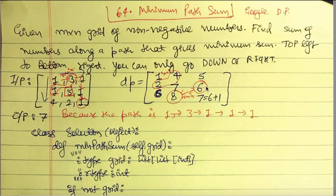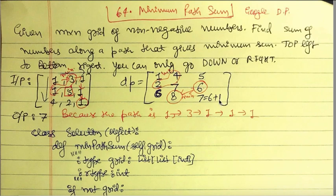For the DP value corresponding to grid element 2, the top is 7 and the left is 6; minimum is 6, so 6+2 = 8. Finally, at the bottom-right element (1), the top DP value is 6 and the left is 6; minimum is 6, so 6+1 = 7. Since the DP array represents the lowest cost to reach each point, 7 is our answer. The optimal path is 1→3→1→1→1.